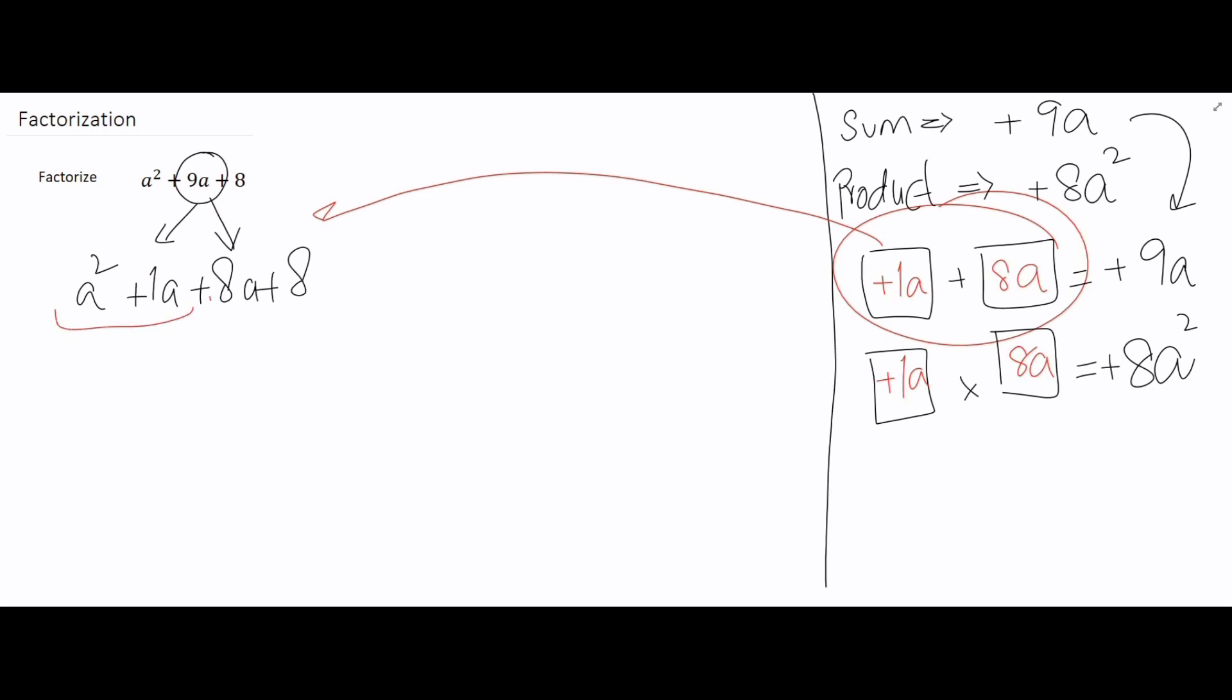Now I'm going to split these four terms into groups of two. In the first pair we can see that a is common, so we are going to write it outside the bracket and then this a is divided by both the above numbers which is a squared and 1a, so we are left with a plus 1 inside the bracket.